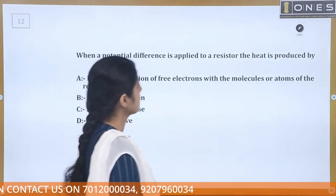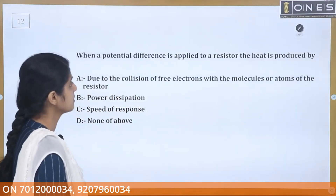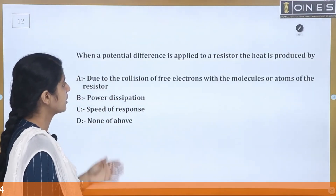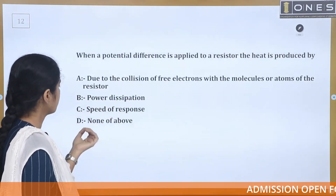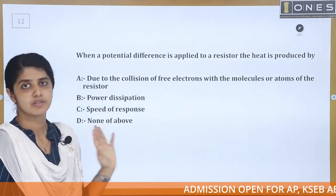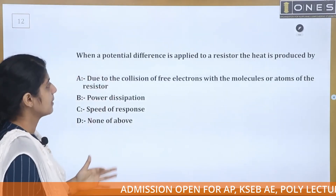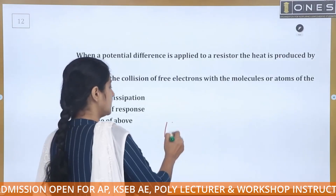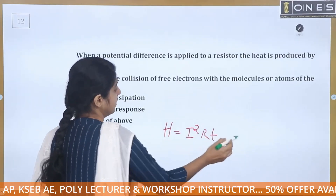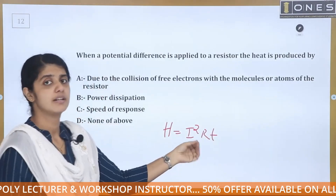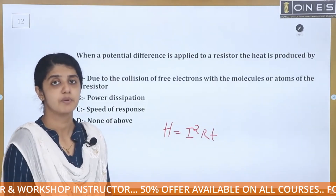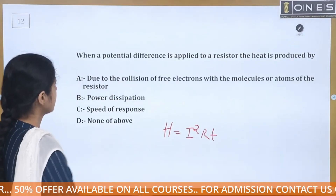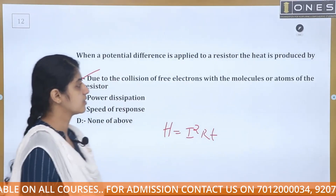When a potential difference is applied to a resistor, heat is produced. The options are: due to the collision of free electrons with the molecules or atoms of the resistor, power dissipation, speed of response, or none of the above. The equation of heat is I²Rt. The answer is: due to collision of electrons.